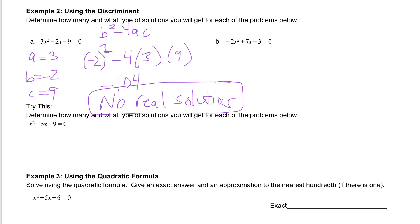Let's try another one, letter b. Letter b we have negative 2x squared plus 7x minus 3 equal to 0. So first let's label. We start with a. Remember a is the number that is in front of the x squared. So our a is negative 2.